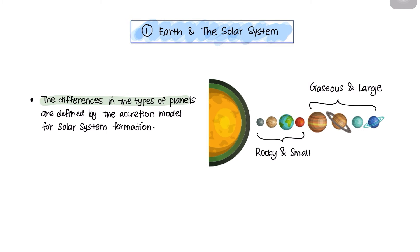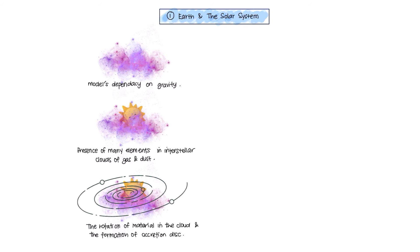Now, the differences in the types of planets are defined by the accretion model for solar system formation. The first four nearest planets are rocky and small, and the four furthest planets are gaseous and large. But what is an accretion model?